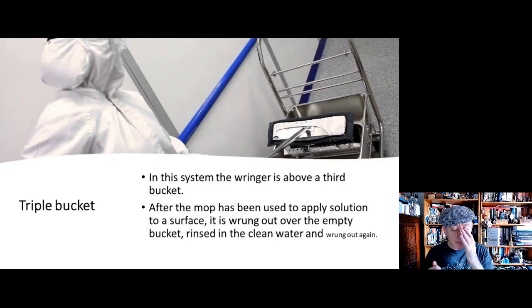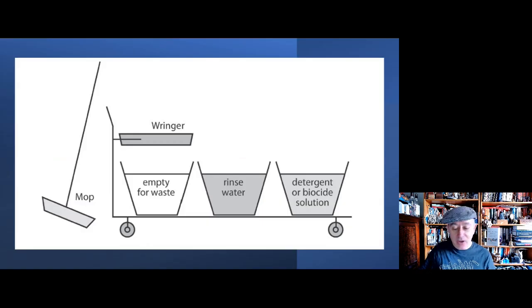What we look at is the triple bucket system. This has a wringer to squeeze out the mop above a third bucket. After the mop has been used to apply solution to the surface, it's wrung over an empty bucket, rinsed in clean water, and then it's wrung out again, and we can show that in this picture.